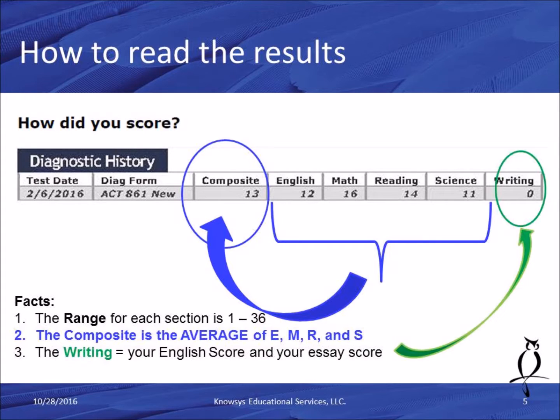The writing score is actually a combination score — it's your English score plus your essay score. So if you don't submit an essay, then your writing score will be zero. Otherwise it'll be some score between 1 and 36.